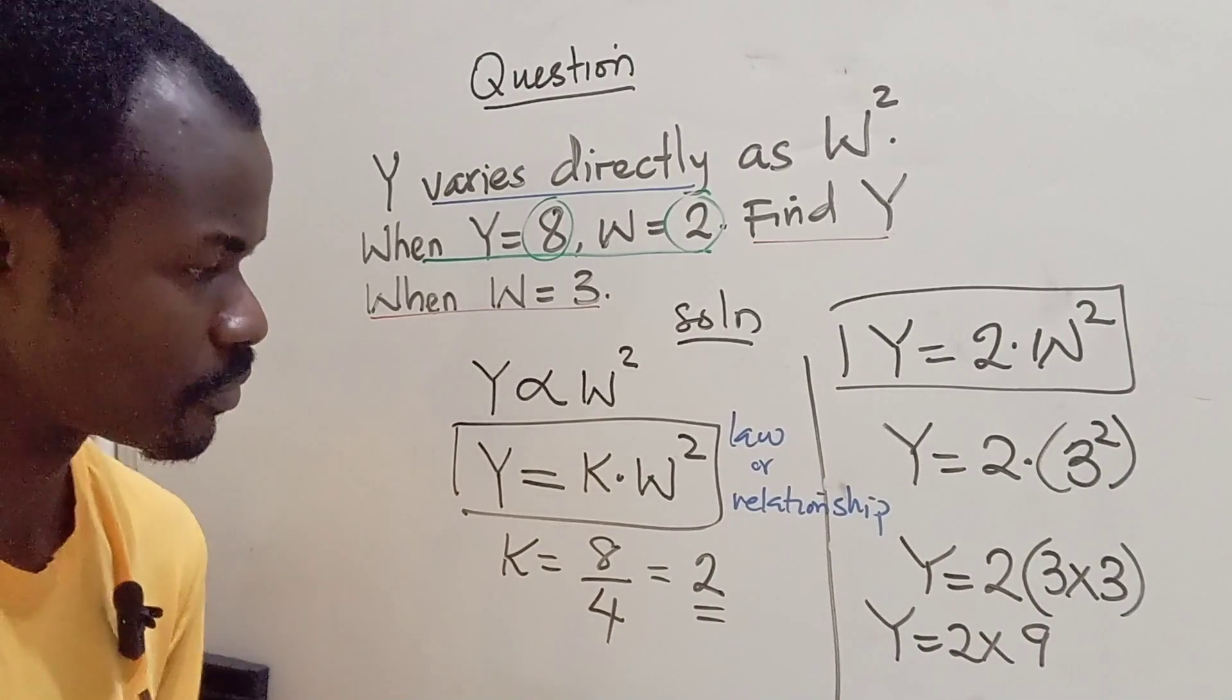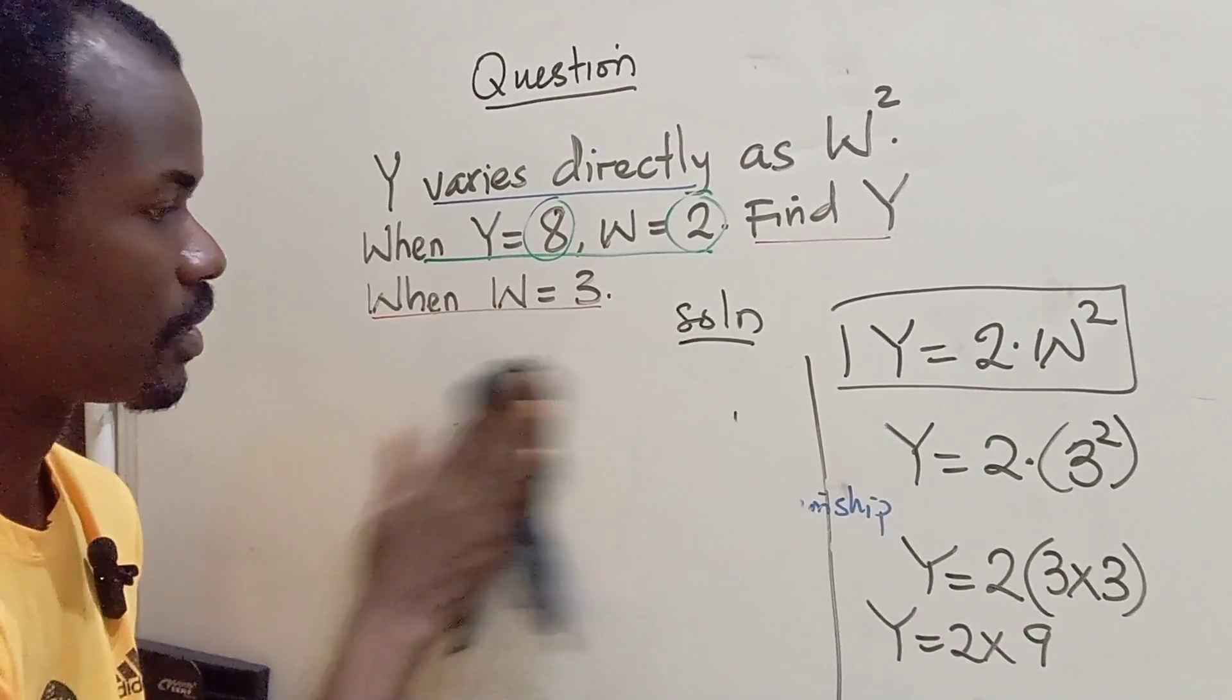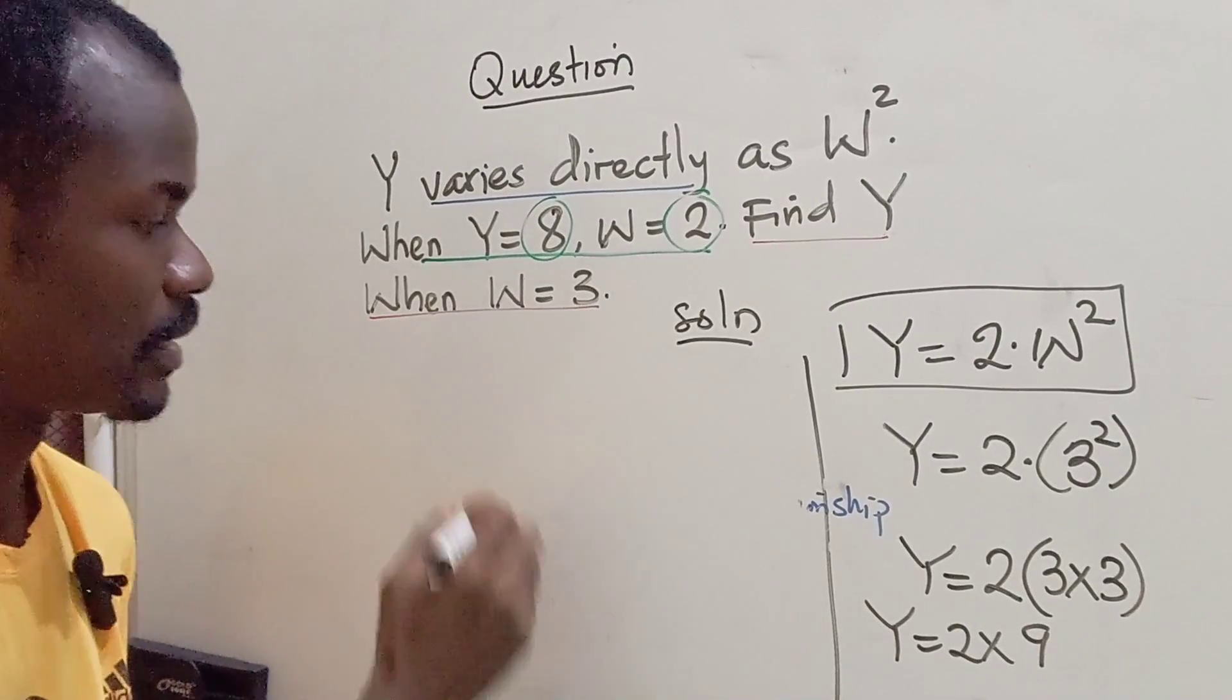So what is 2 times 9? 2 times 9 is simply going to give us 18.